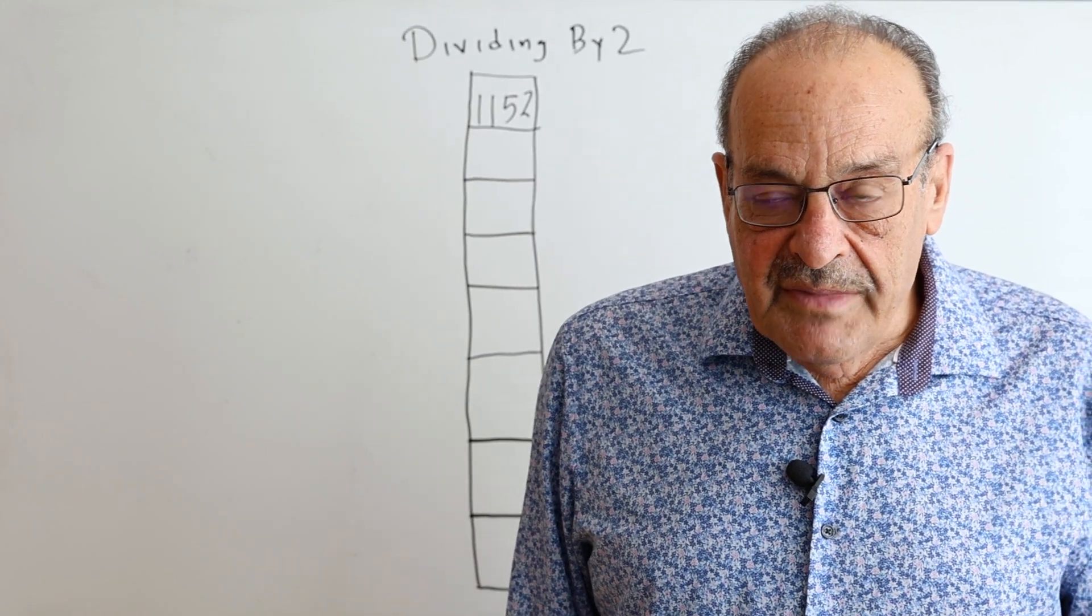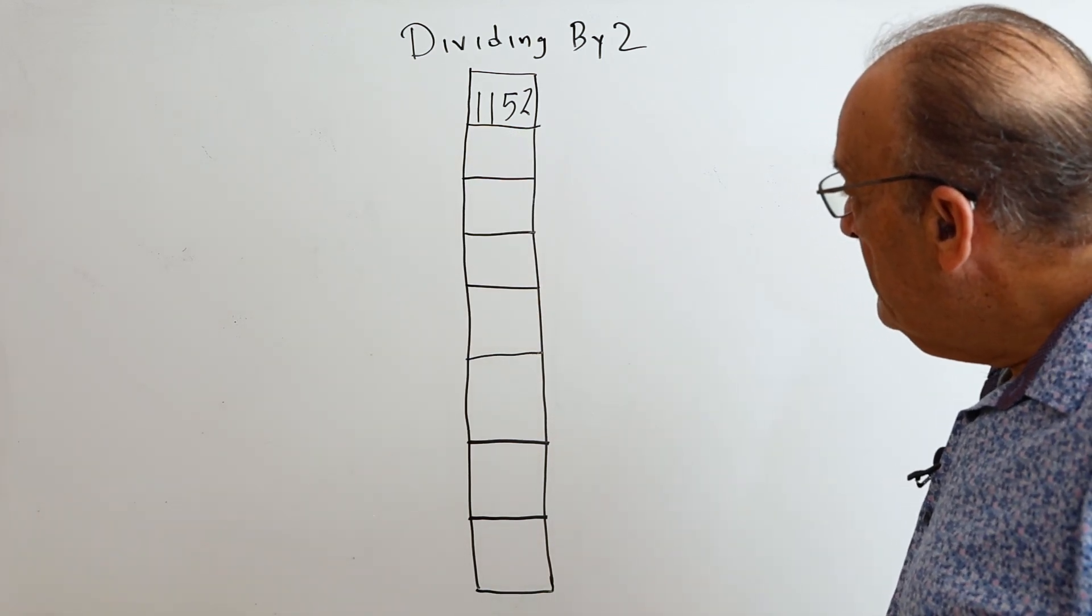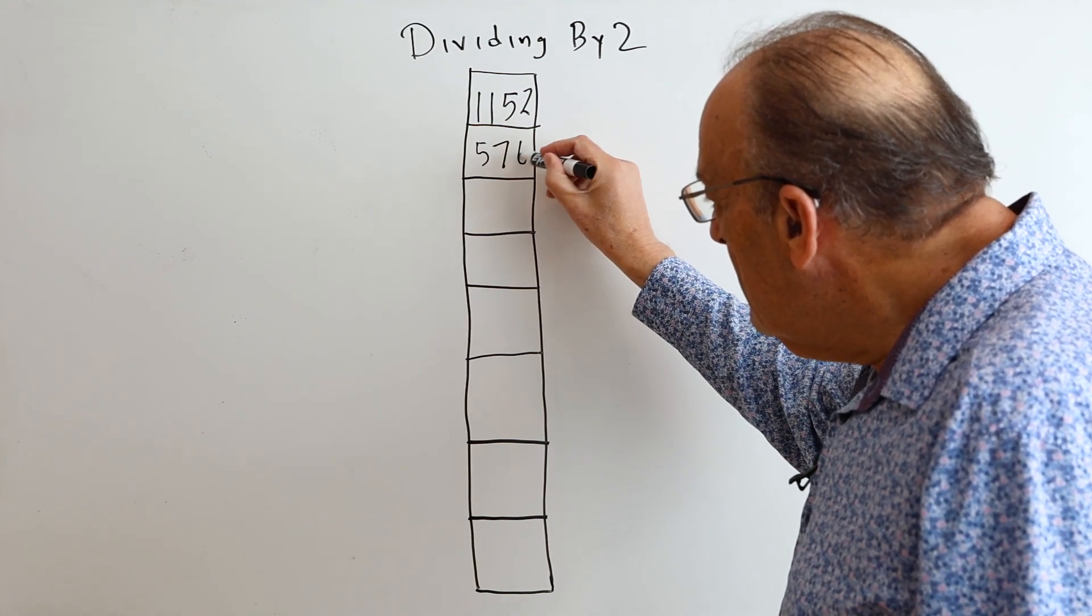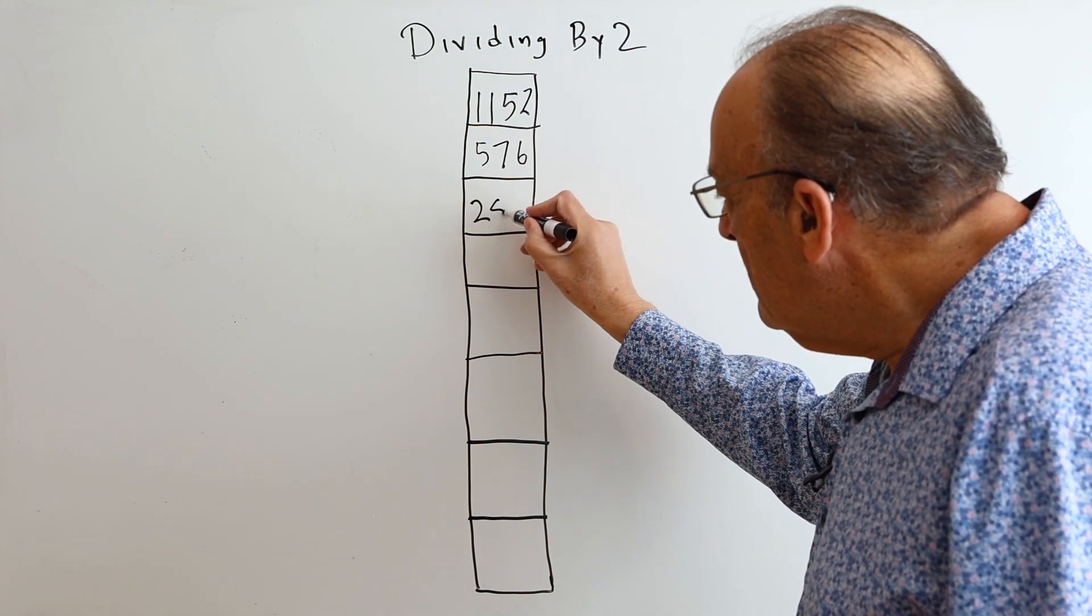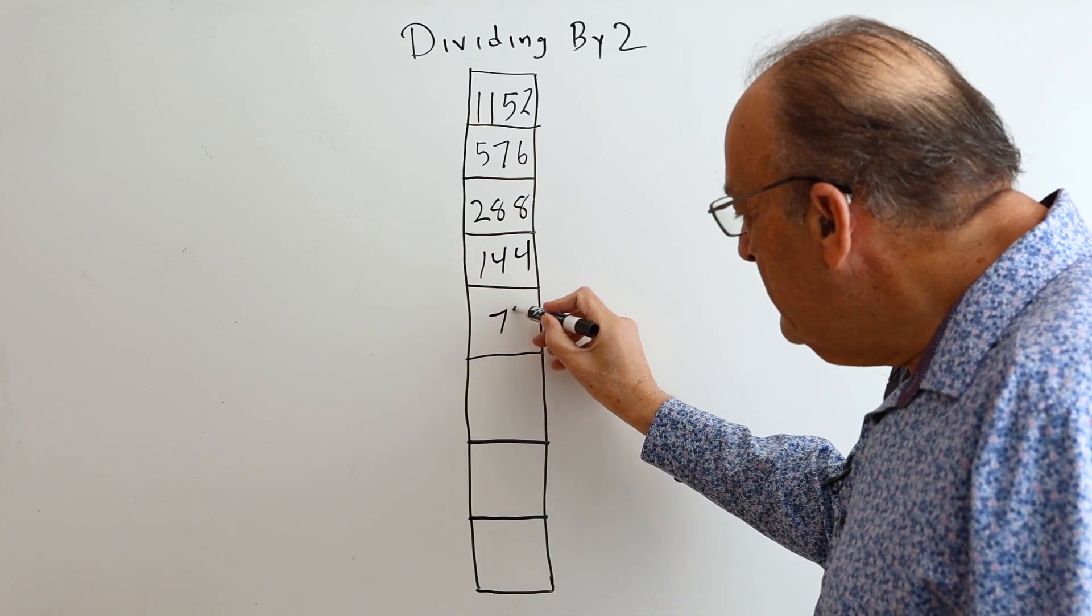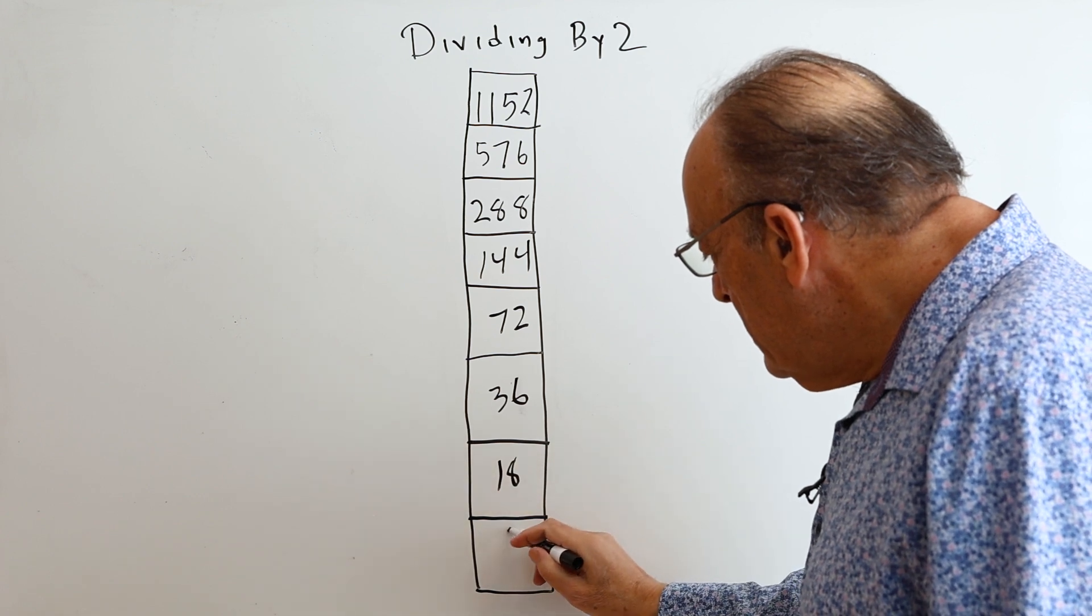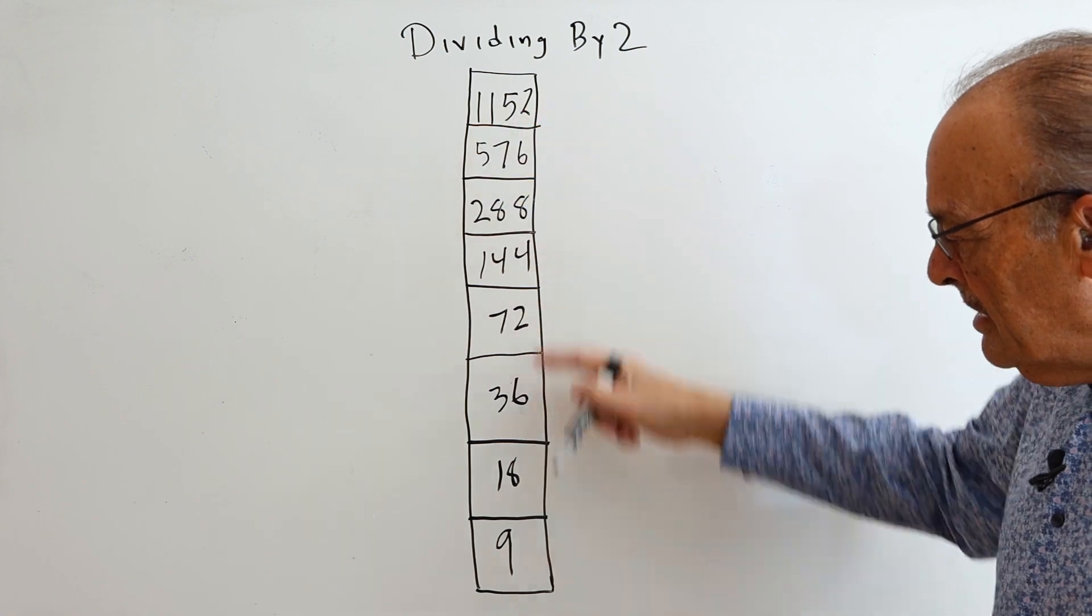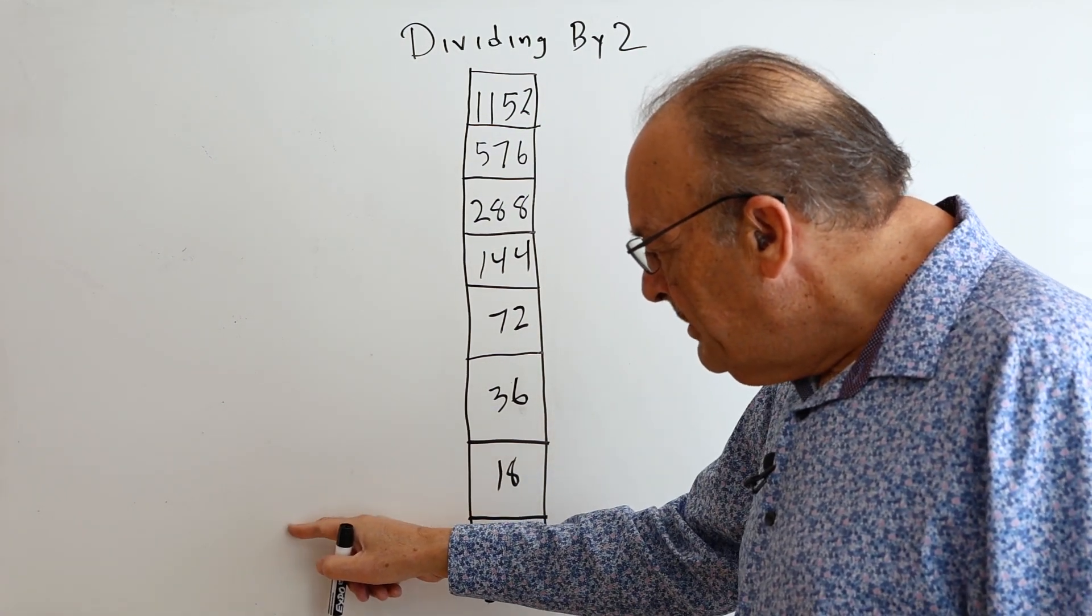Another sheet I have is called dividing by 2. Let's see if I can do this in my head. That's going to be 500 plus 50 plus 26, that's 576 I believe. And then that's going to be 250 plus 38, 288. And 144, 72, 36, 18 and 9. This is actually the right most column on the page. The previous numbers end with 7, 5, 3 and 1.